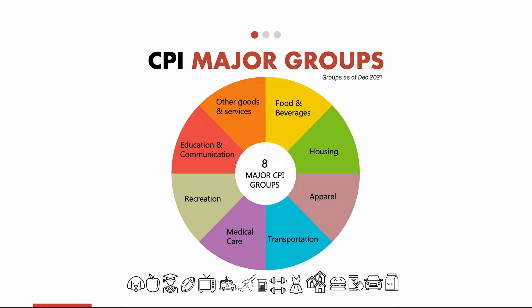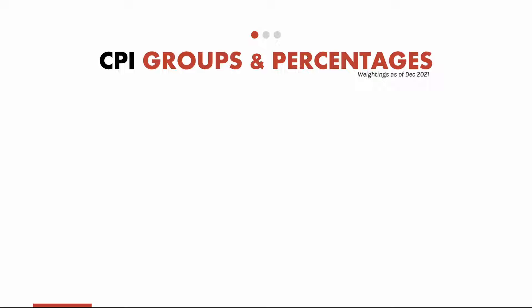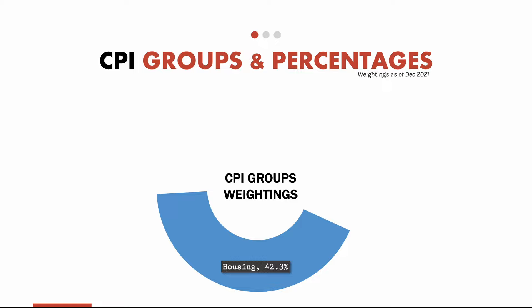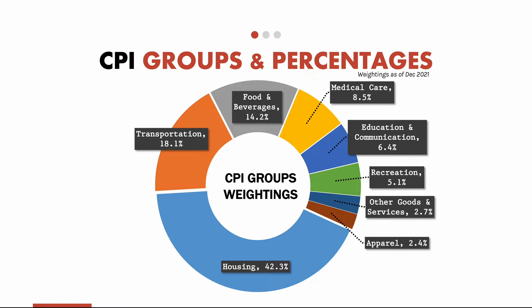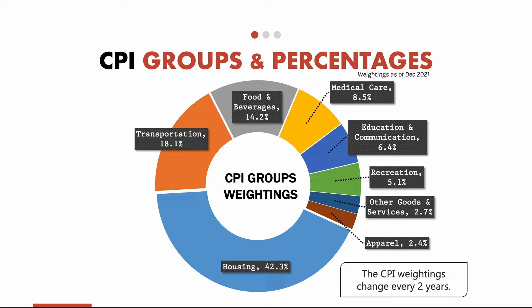Let's look at the weightage of each group in the CPI market basket. Housing is 42.3%, transportation is 18.1%, and food and beverages is 14.21%. The top three groups — housing, transportation, and food and beverages — add up to 74%, or basically three-fourths of the CPI market basket. With the CPI index, weightings are assessed every two years and modifications are made if necessary.